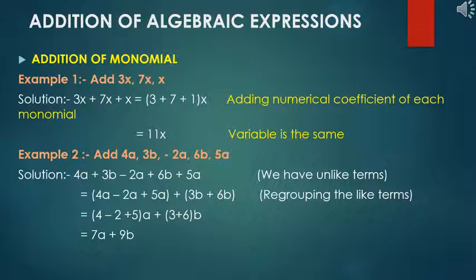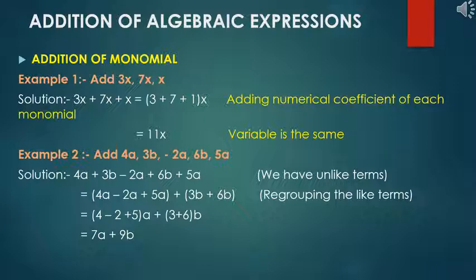Example 2: Add 4a, 3b, minus 2a, 6b, 5a. Solution: 4a plus 3b minus 2a plus 6b plus 5a. We have unlike terms, so first regroup the like terms: (4a minus 2a plus 5a) plus (3b plus 6b). This gives (4 minus 2 plus 5)a plus (3 plus 6)b, which equals 7a plus 9b.